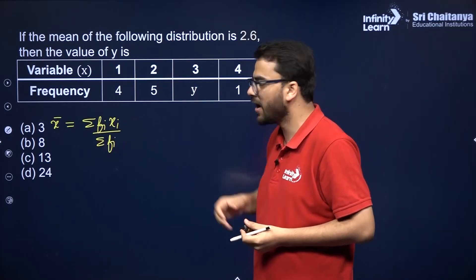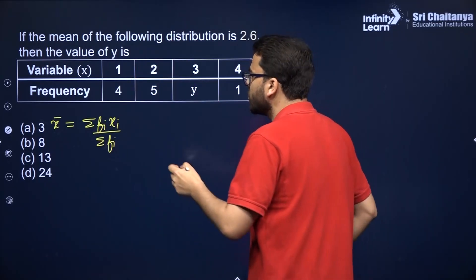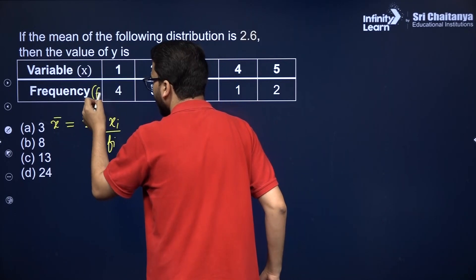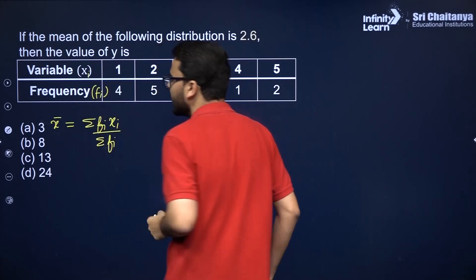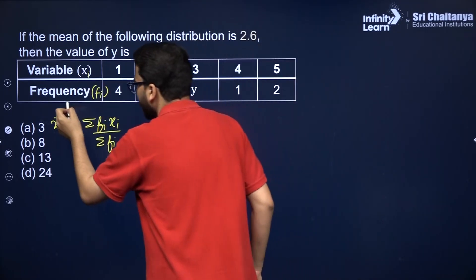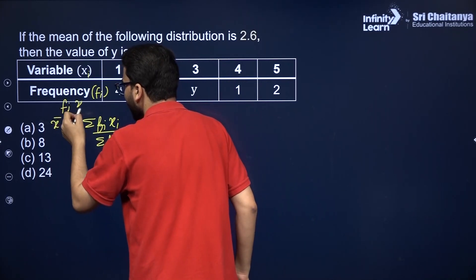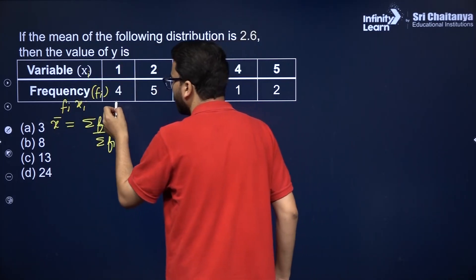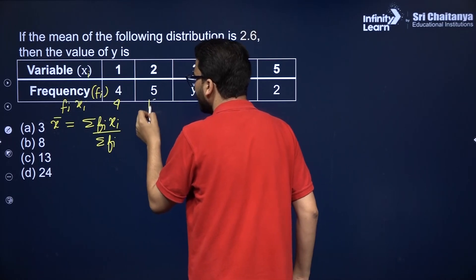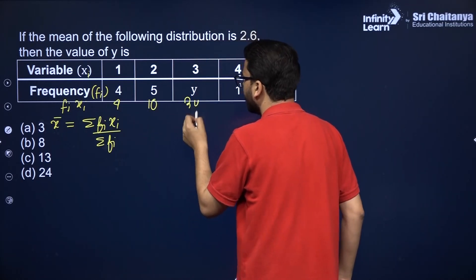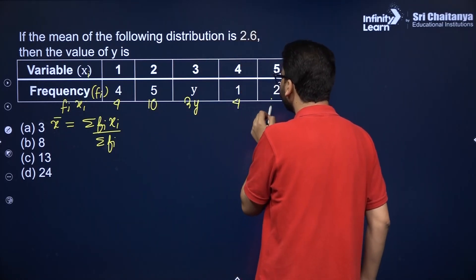So Mean = Σfi·xi / Σfi. The fi values are already given; these are the xi values. We need to compute fi·xi: 4×1 = 4, 5×2 = 10, 3y, and 2×5 = 10.